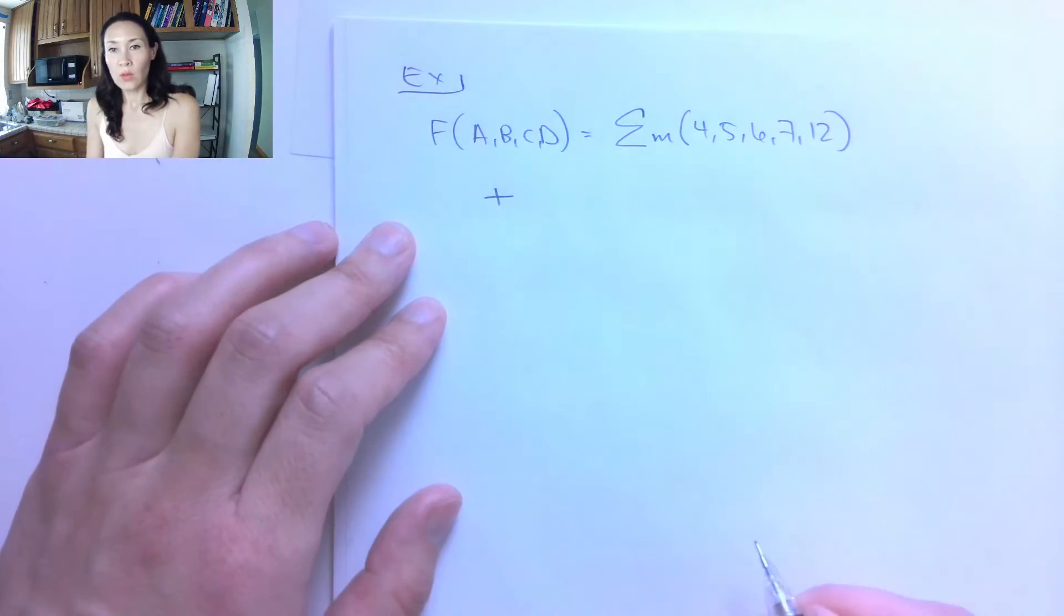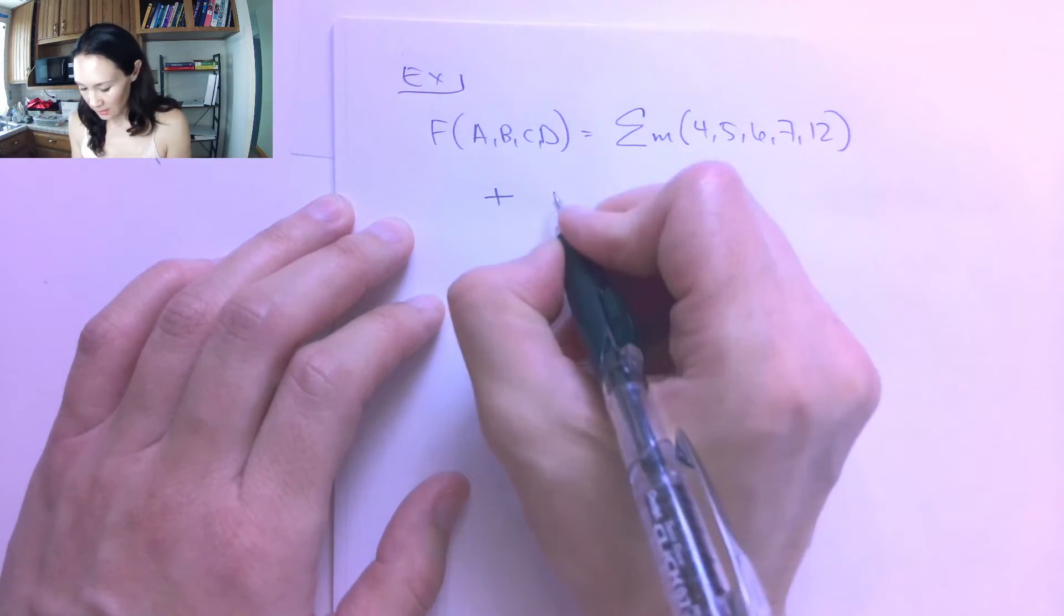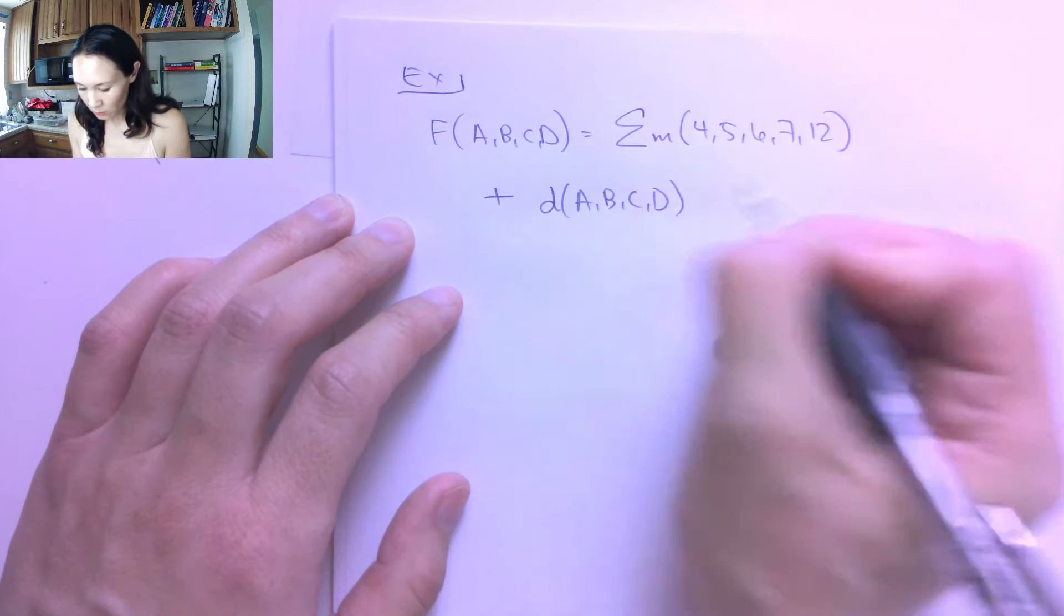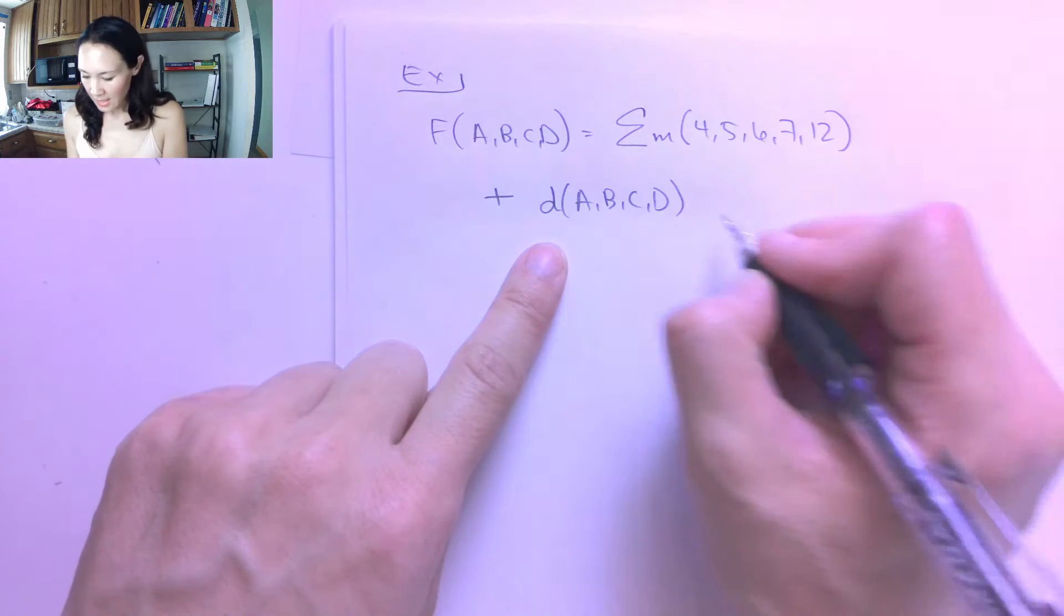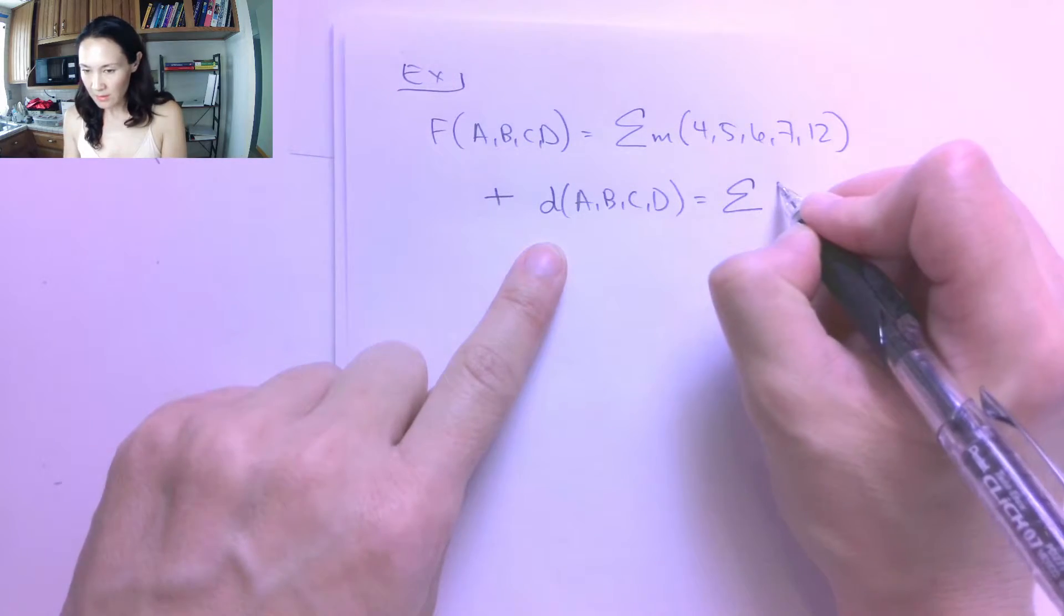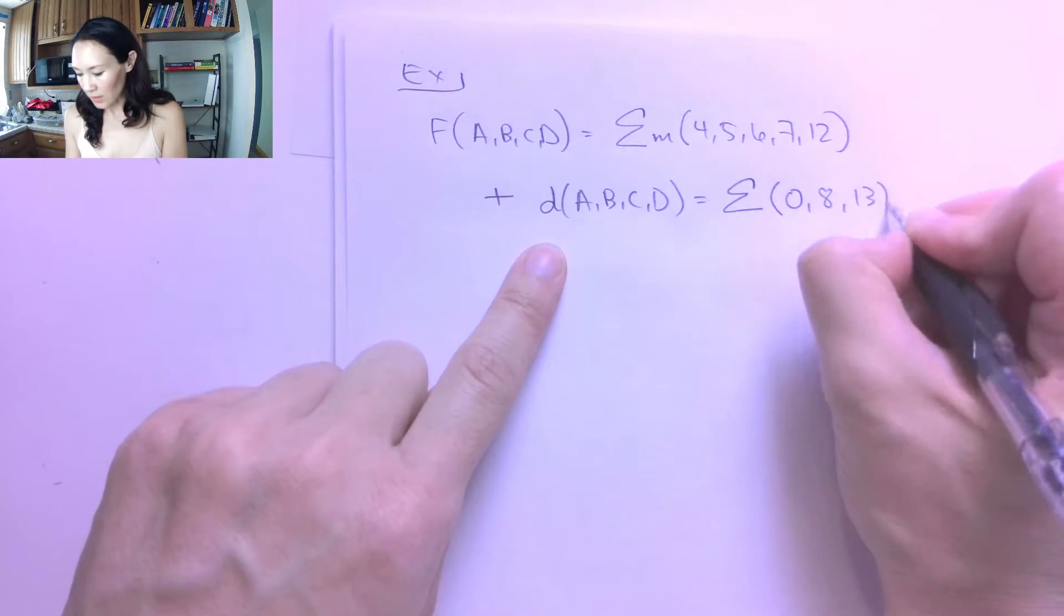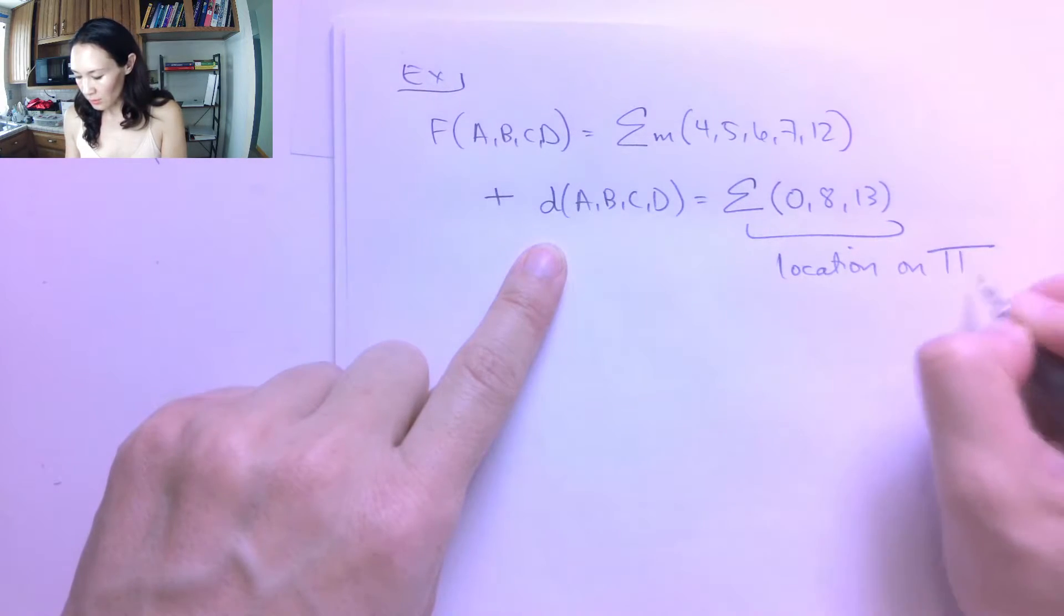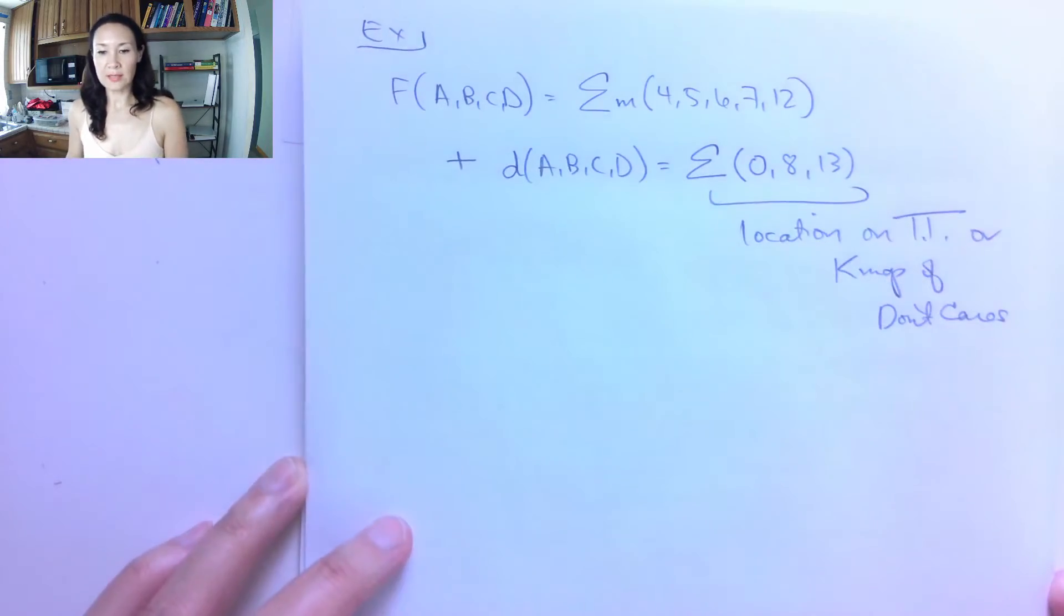Plus, we're going to have some don't care conditions. And the notation for this that you'll see in a problem like this looks like this. It's a little d, and then sometimes they'll tell you what the inputs are. So this is like function notation in terms of the inputs. So the little d stands for don't care. And this will be given to us as a sum. They're not really minterms, so you may not see a little m here. But this is going to tell you the location of the don't cares, the location on truth table or K-map of don't cares.